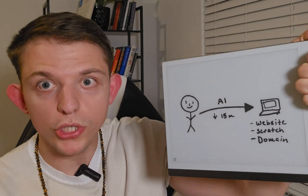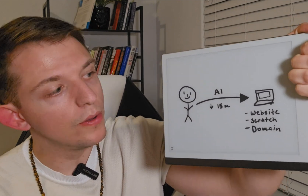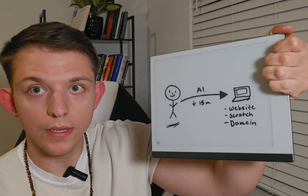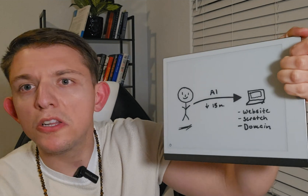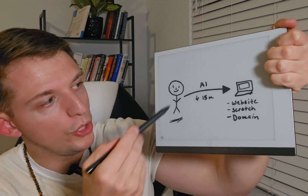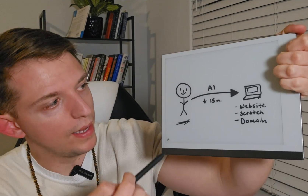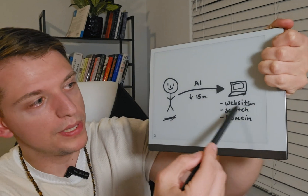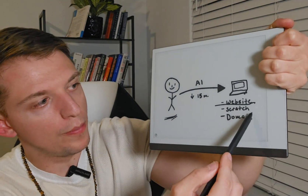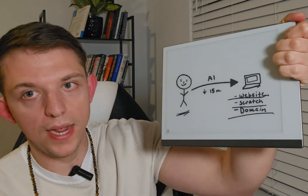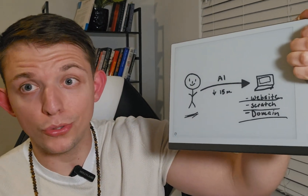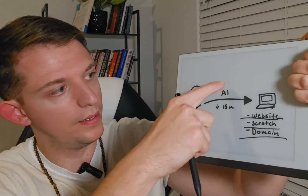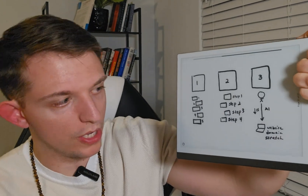The main theme of this video is just like the last video. Here's you, with no coding experience or maybe a little coding experience. And you want to use AI and less than 15 minutes of your time to create a website from scratch with your own domain that you choose. You buy and use that domain for your website. This is what we're going to talk about in this video.